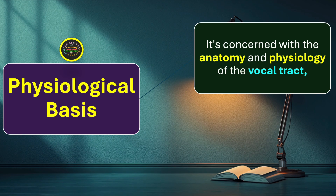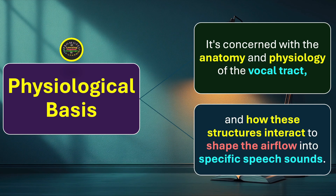This characteristic deals with how the anatomy and physiology of the vocal tract interact to shape airflow into specific speech sounds. The way these structures interact helps us produce a particular speech sound — that is the key point of the physiological basis.